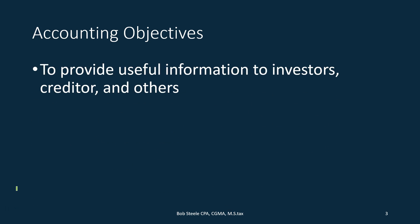So, accounting objectives. We have an accounting objective to provide useful information to investors, creditors, and others. The main principle is that for financial accounting, our objective will generally be to create financial statements for external users — those users being outside of the company, primarily investors and creditors. That doesn't mean the financial statements won't be used internally; it just means the primary objective is for external use.